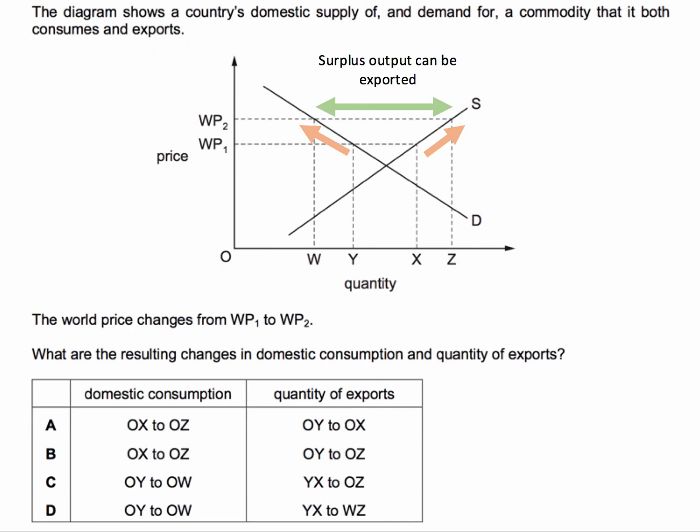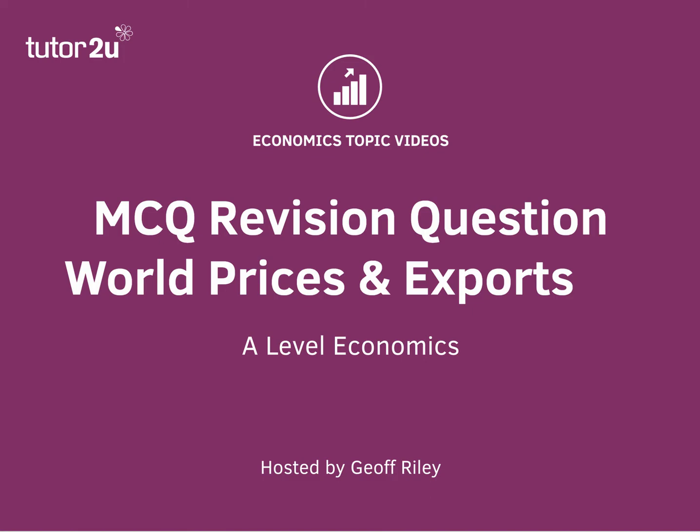As a result, the surplus production that can be exported is going to increase. The new export surplus will be WZ. So reading back to our options: domestic consumption contracts from OY to OW, and the quantity of exports expands from YX to WZ. That's the answer to this question.